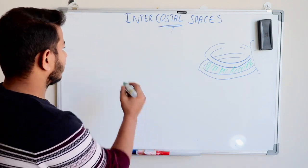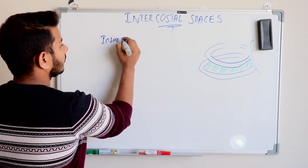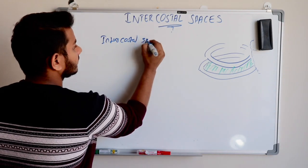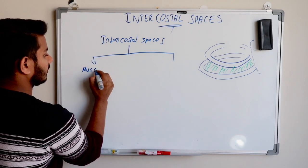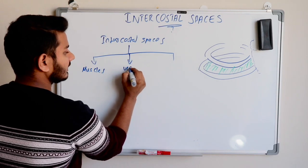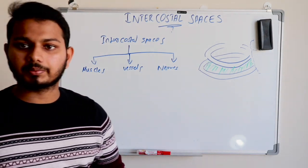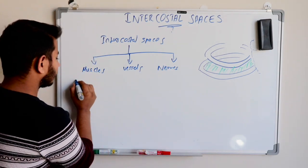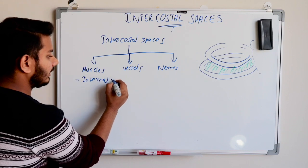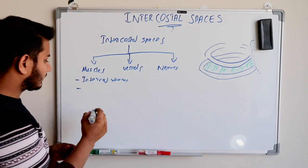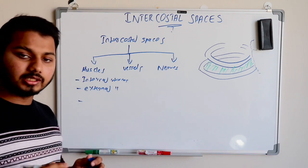Intercostal spaces contain muscles, vessels and nerves. The muscles present in intercostal spaces are: internal intercostal, external intercostal, and innermost intercostal.